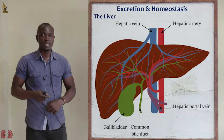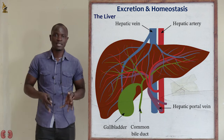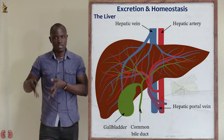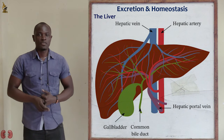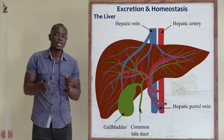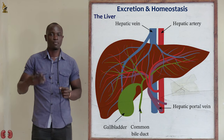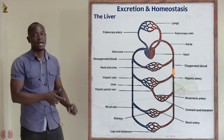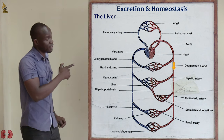The liver lies below the diaphragm and it receives blood from the hepatic artery, which is a branch of the aorta. It also receives blood from the hepatic portal vein, which is a branch from the stomach and the intestines, as you can see in the diagram.